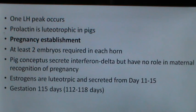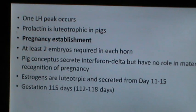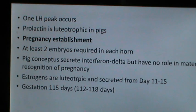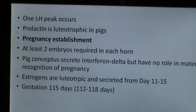One LH peak occurs in pigs and prolactin is luteotropic. For establishment of pregnancy, at least 2 embryos are required in each horn. The pig conceptus secretes interferon delta but it has no role in maternal recognition of pregnancy. Estrogens are luteotropic and are secreted from day 11 to day 15. The gestation period for pigs averages 115 days, varying from 112 to 118 days.